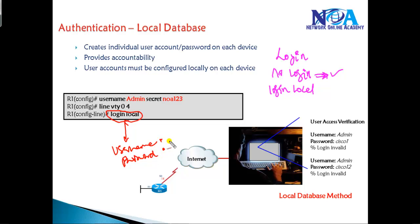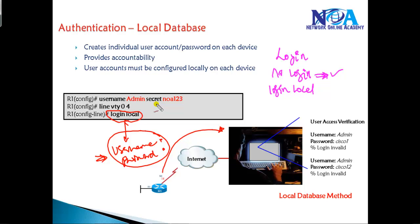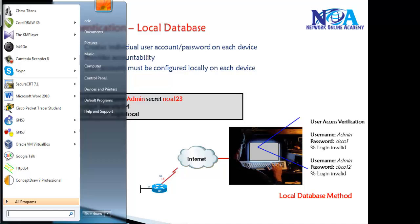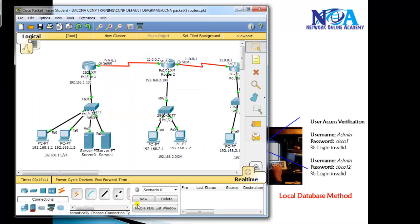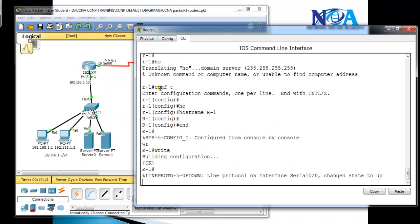Using 'login local' is a more common way of authenticating device access. When anyone tries to log into your router, it will prompt for both the username and the password. That username and password must be created in the local database. We need to create a username using the username command and then assign a password. Let's get into the command line to verify these configurations.